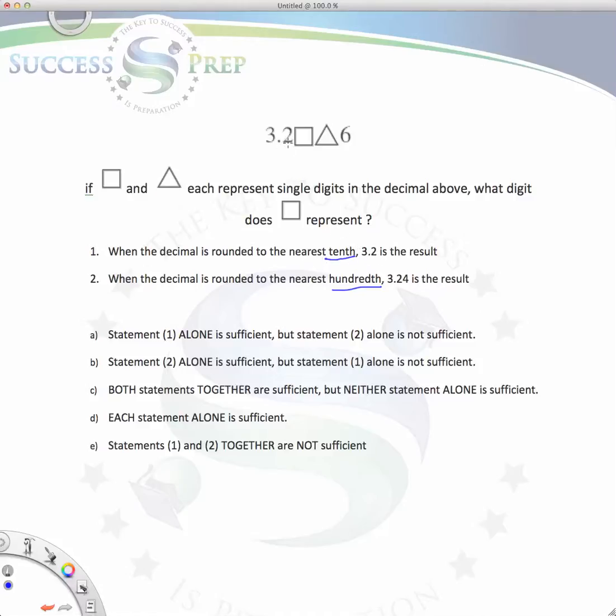If you look at the question 3.2□△6, the value of square is not quite clear, even though we know when we round it to the nearest tenth we get 3.2. Rounding to the nearest tenth means we pretty much look at this 2 and then see if the number next to it is 5 or greater. At this point, we still don't know what the square is, which is what we're looking for anyway. So telling us that it rounds to 3.2 is not really helpful. So statement 1 is not helpful.